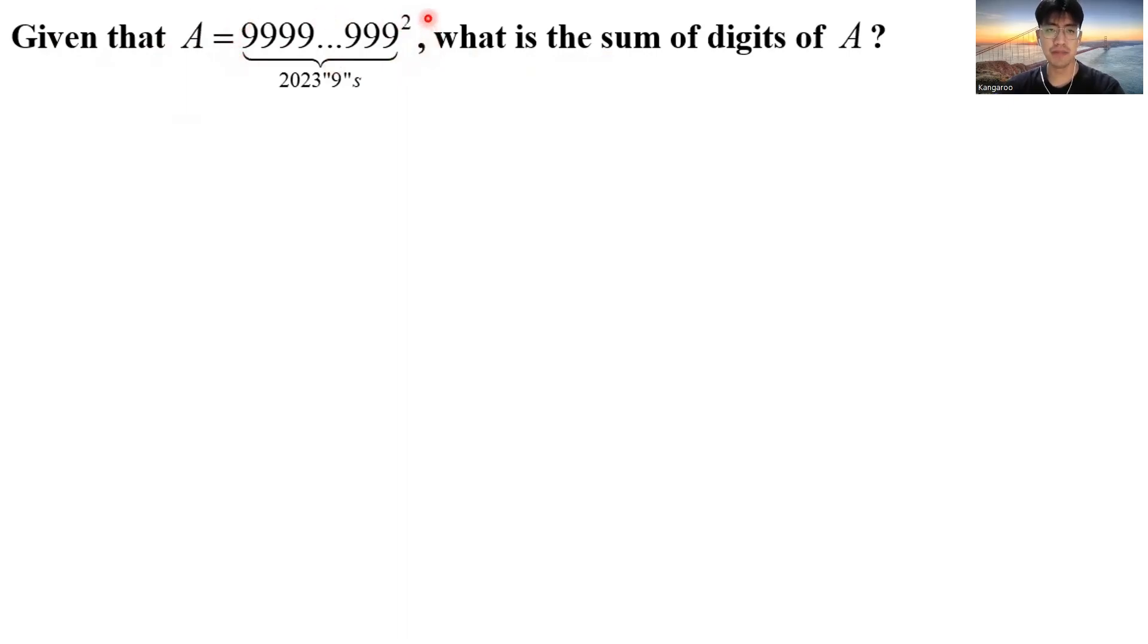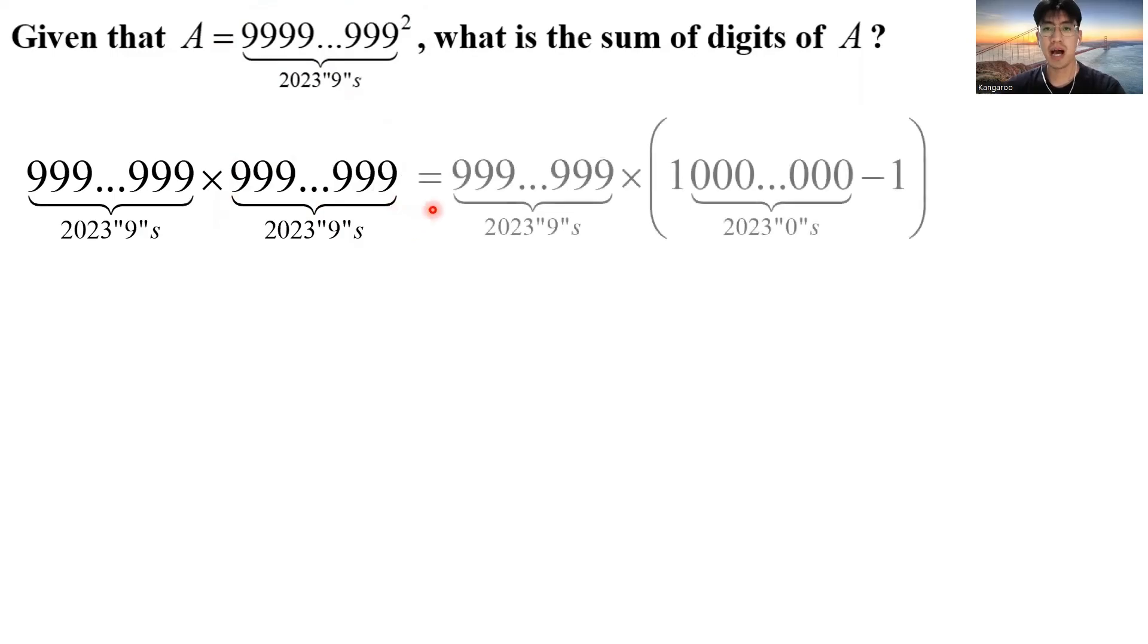This is such a huge number, so there is absolutely no way we can calculate this. So let us think how I would simplify this problem. For example, I can express this as a multiplication, and with multiplication, I know it is fairly simple if I have a multiple of 10. So how would I express this number as a multiple of 10? I could do this. I can have 1 following with 2,023 zeros minus 1, which is the same as the left-hand side.